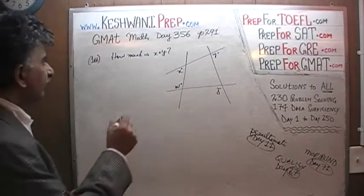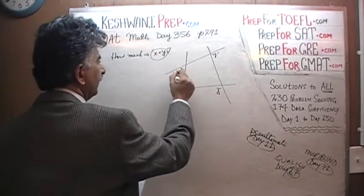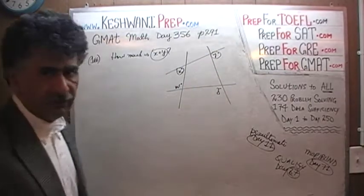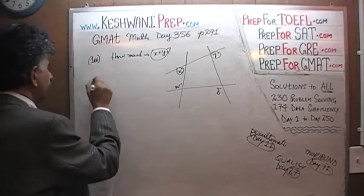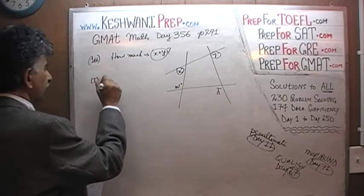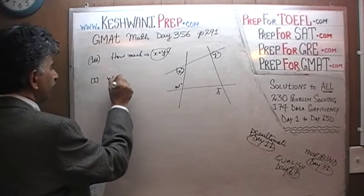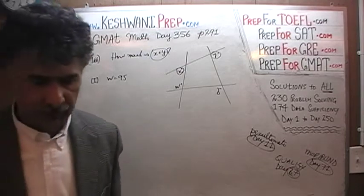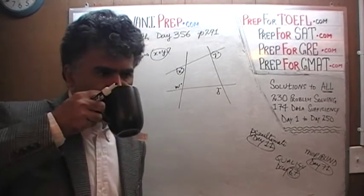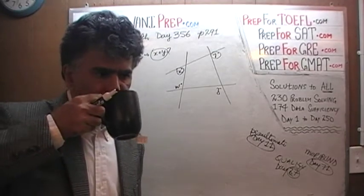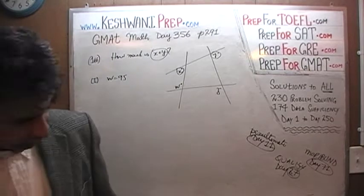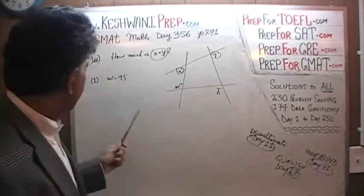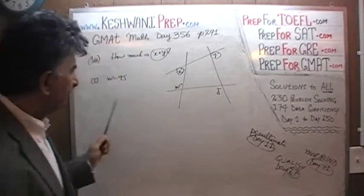What we are interested in is the sum of x and y. Let's see what they tell us in the first statement. In the first statement, they tell us that w is 95 degrees. W is right here — w is 95.